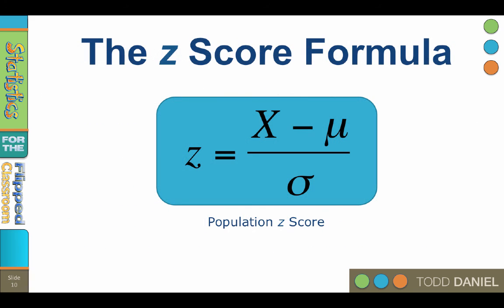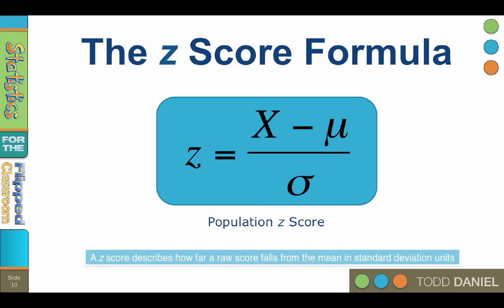Here is the z-score formula in symbols: z equals x minus mu divided by sigma, where z is your z-score, x is the raw score, mu is the population mean, and sigma is the population standard deviation. The z-score describes how far a raw score falls from the mean in standard deviation units. Remember this formula because we will use it next.